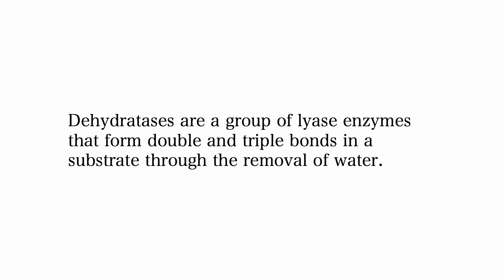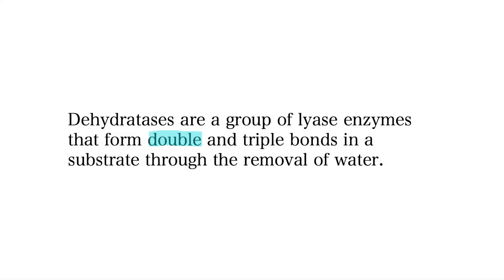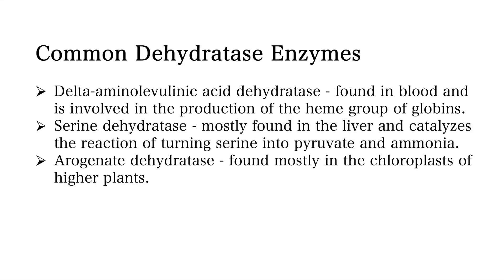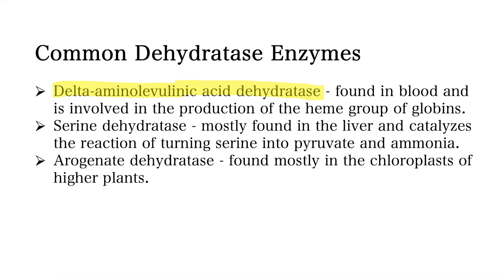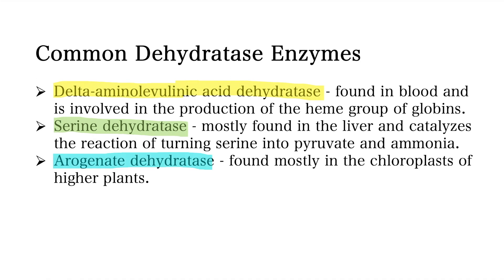Dehydratases are a group of lyase enzymes that form double and triple bonds in a substrate through the removal of water. Common dehydratases include delta-aminolevulinic acid dehydratase, serine dehydratase, and arogenate dehydratase. Delta-aminolevulinic acid dehydratase is found in blood and is involved in the production of heme groups. Serine dehydratase is mostly found in the liver and catalyzes the reaction of turning serine into pyruvate and ammonia. Arogenate dehydratase is found mostly in the chloroplasts of higher plants.